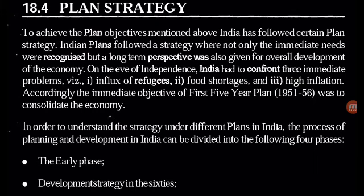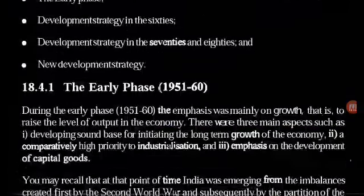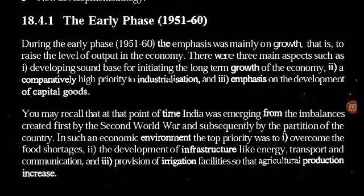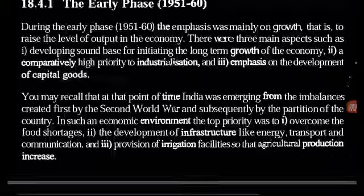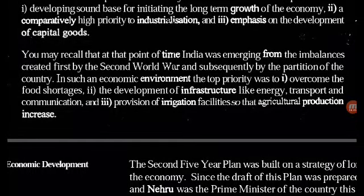During the early phase of 1951-60, the emphasis was mainly on growth — that is, to raise the level of output in the economy. There were three main aspects: first, developing a sound base for initiating the long-term growth of the economy; second, a comparatively high priority to industrialization; and third, emphasis on development of capital goods. At that point, India was emerging from the imbalances created first by the Second World War and subsequently by the partition of the country. The top priorities were: overcoming food shortages, development of infrastructure like energy, transport and communication, and provision of irrigation facilities so that agricultural production increased.